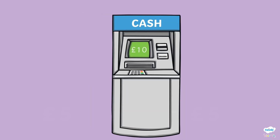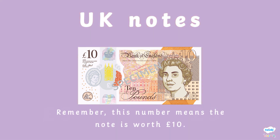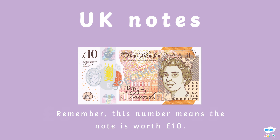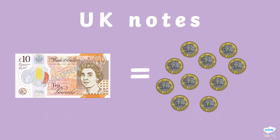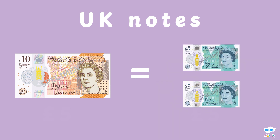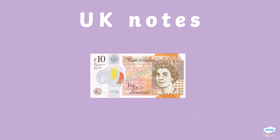Shall we see what other notes the cash machine will give to us? It's £10! We know that this note is worth £10 from the number in the top left corner. £10 is also equivalent to ten £1 coins, but it is also the same as two £5 notes. Think: 5 add 5 equals 10, so £5 add £5 is the same as £10.